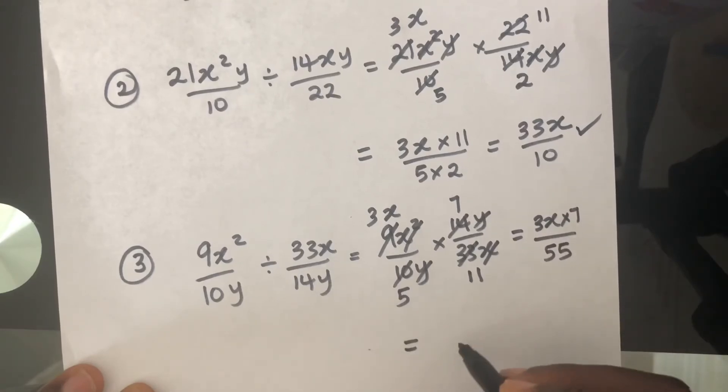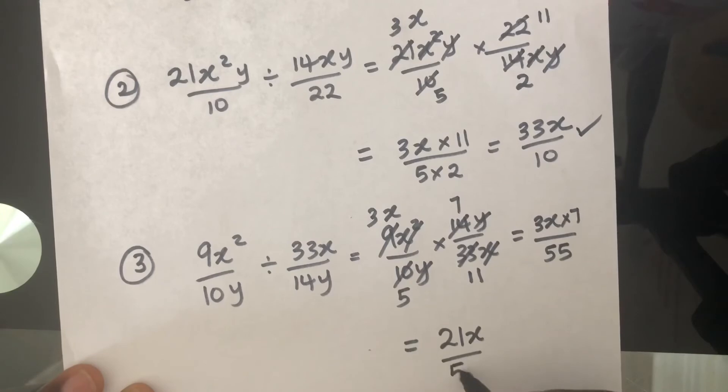So what we have left, we have 3X times 7 over 55. This is going to give us 21X over 55. Can we simplify that any further?